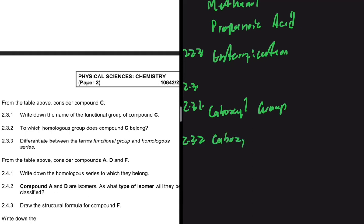Compound C is a carboxylic acid — that's an easy question. For 2.3.3, differentiate between the terms 'functional group' and 'homologous series.' A homologous series is a series of organic compounds that can be described by the same general formula. A functional group, on the other hand, is the bond, atom, or group of atoms that determines the physical and chemical properties of a group of organic compounds.